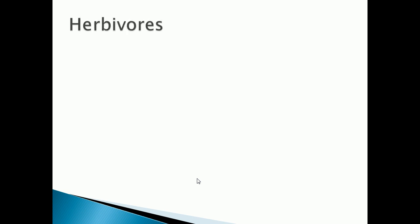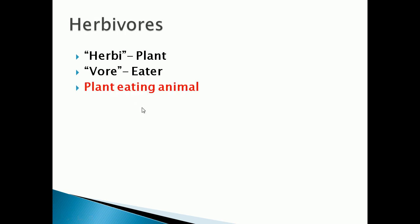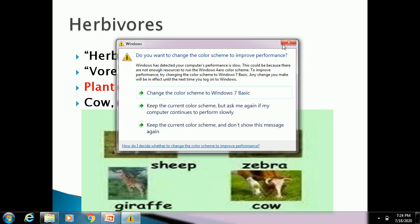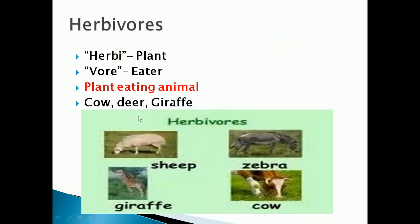First is herbivorous. The word 'herbi' means plant and 'vorous' means eater, so these are plant-eating animals. Examples of herbivorous are cow, deer, giraffe, sheep, and zebra. These plant-eating animals have sharp front teeth called incisors. By using those sharp front teeth, they bite and pull off plants from the ground, and use broad molars to grind them.